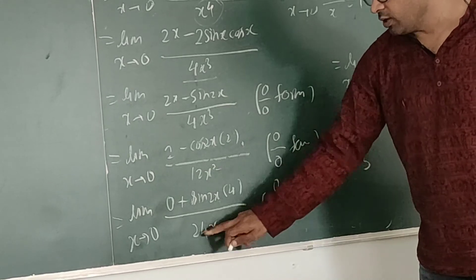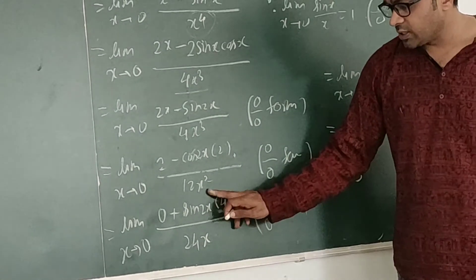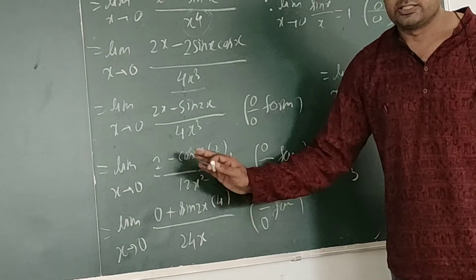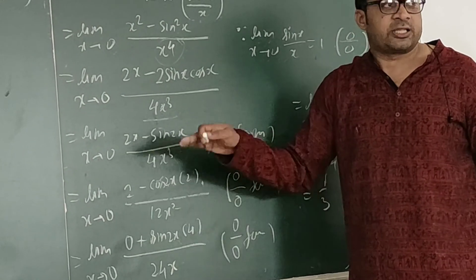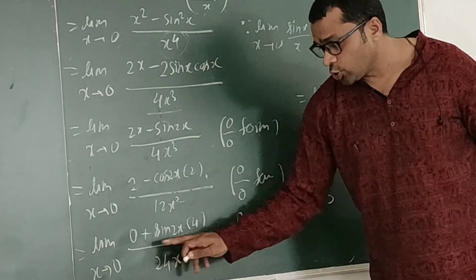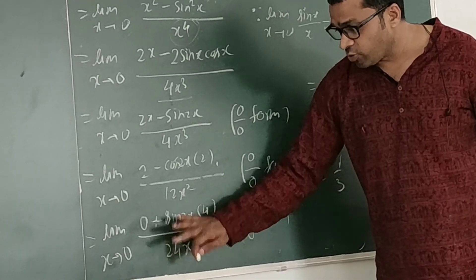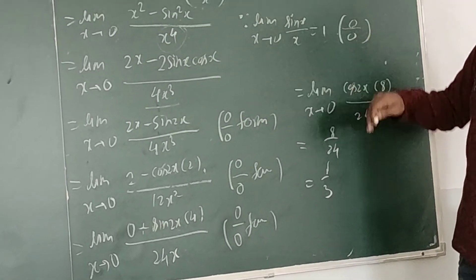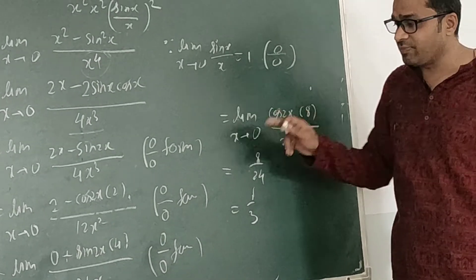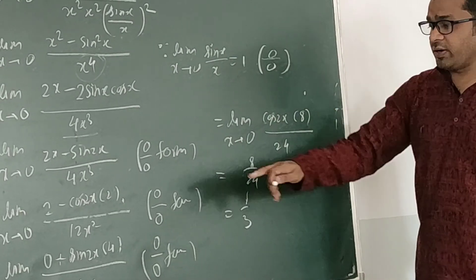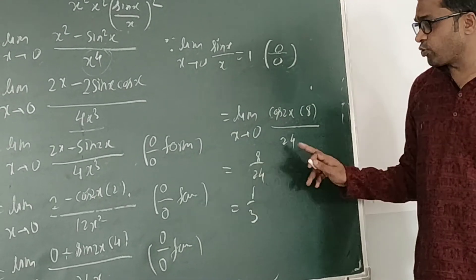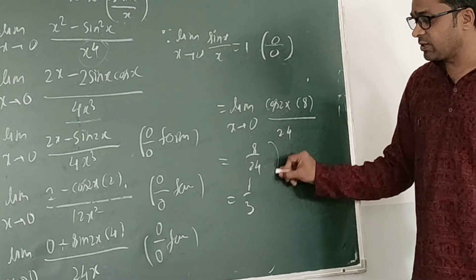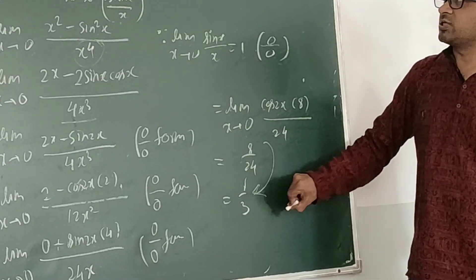Apply L'Hôpital again: derivative of cos 2x is −sin 2x · 2, giving +4 (double negative), denominator becomes 24x. Putting x = 0: sin 0 = 0, still 0/0 form. Apply L'Hôpital once more: derivative of sin 2x · 4 gives cos 2x · 8, denominator is 24. Putting x = 0: cos 0 = 1, so 8/24 = 1/3. The value of this limit is 1/3.